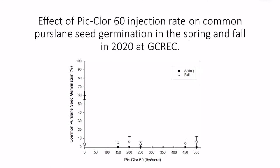The third graph looks at common purslane seed germination. We buried purslane seeds in porous bags in the soil, fumigated, then two weeks later retrieved those bags and germinated the seeds in petri dishes in incubation chambers. In the spring, germination was about 60% when not fumigated, and any fumigation rate killed 100% of the seeds. In the fall, germination rates were poor even in the non-treated, making interpretation difficult. But the data does indicate that Pic Clor-60, even at fairly low rates of 100 pounds per acre, is able to control purslane seeds.